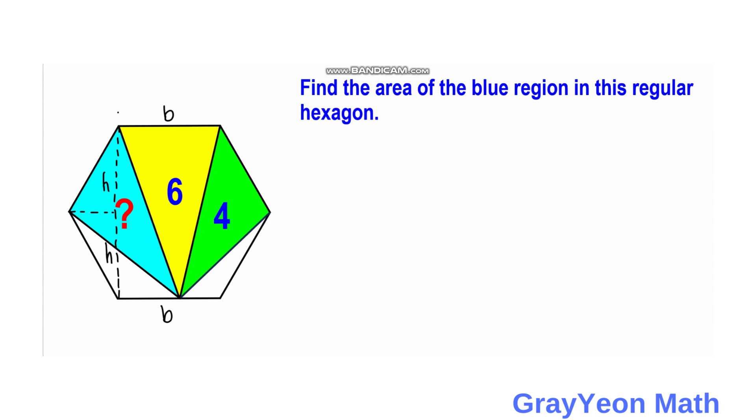Notice that the yellow triangle has a base of B and the height of 2H and an area of 6 square units. And we can simply write an equation about that to be 6 is equal to 1 half times the base, which is B, times the height, which is 2H.